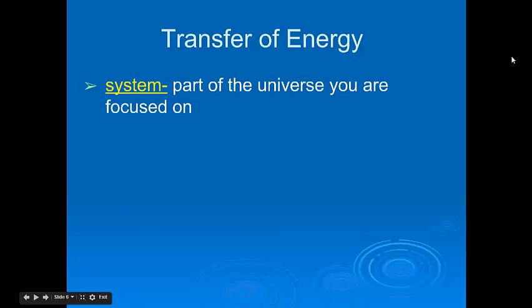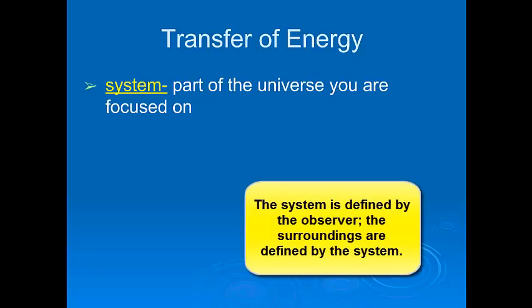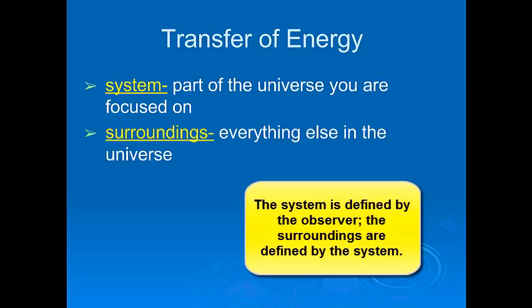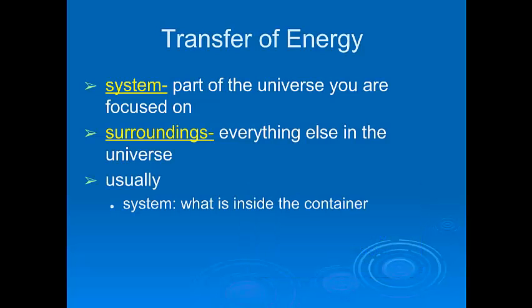Some terms. The system. The system that you are observing is the part of the universe on which your focus lies. The system is something that you just decide. You choose it. You define the system. Once you've defined your system, the surroundings become apparent. The surroundings are defined by your system. Usually, the system is, in chemistry, what's inside your container. That's your system. The surroundings would be anything in contact with that. The room, the container itself, anything that's in contact.